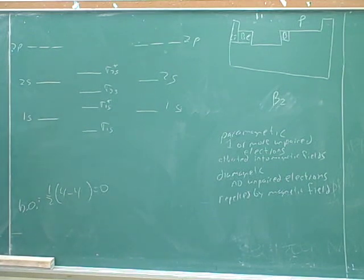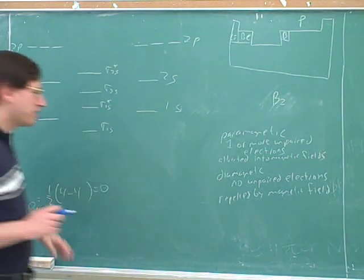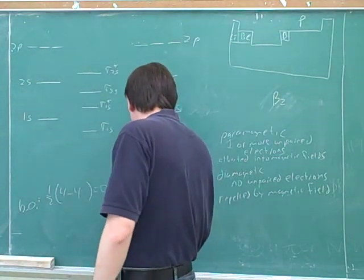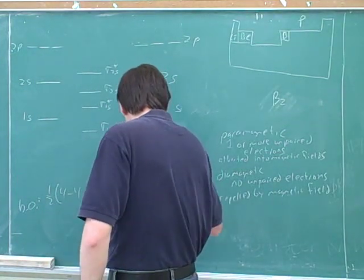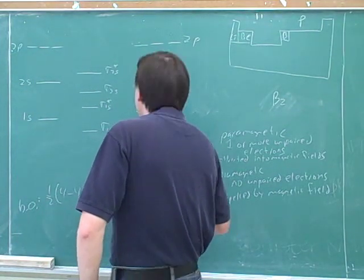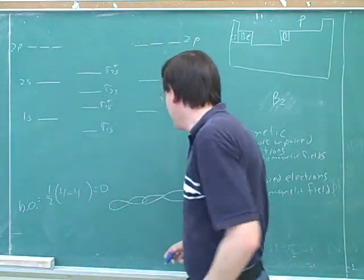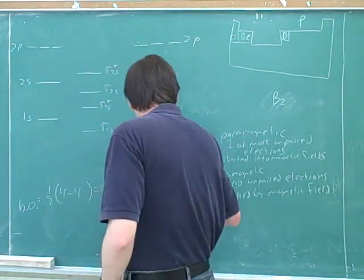The answer is, generally speaking, we can only have one sigma overlap, and the other ones have to be pi. You can kind of see that because remember that the sigma overlap, remember now we're overlapping p orbitals. Well, here's a sigma overlap between two of the p orbitals.